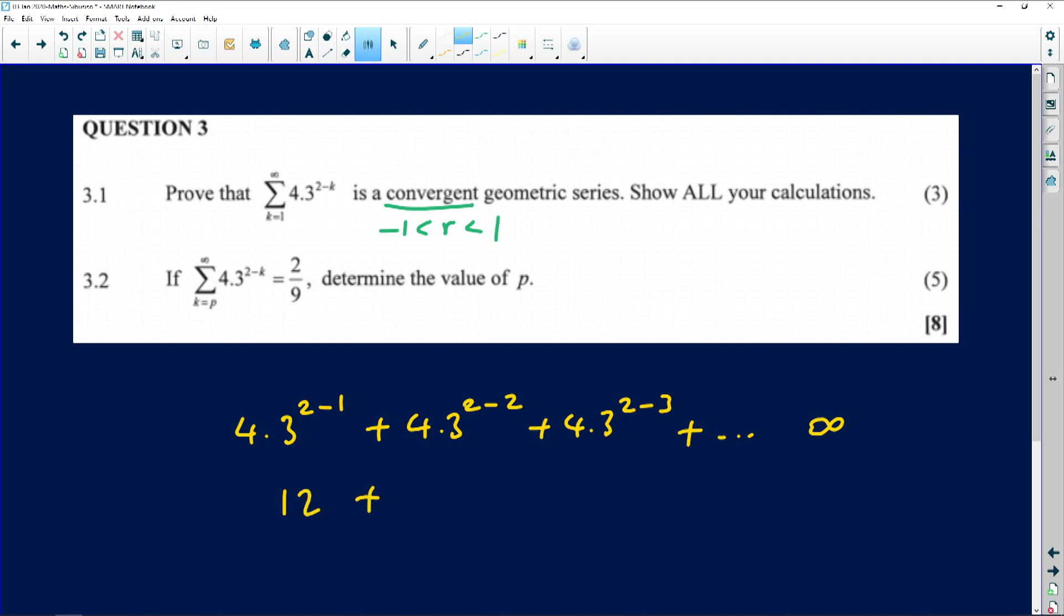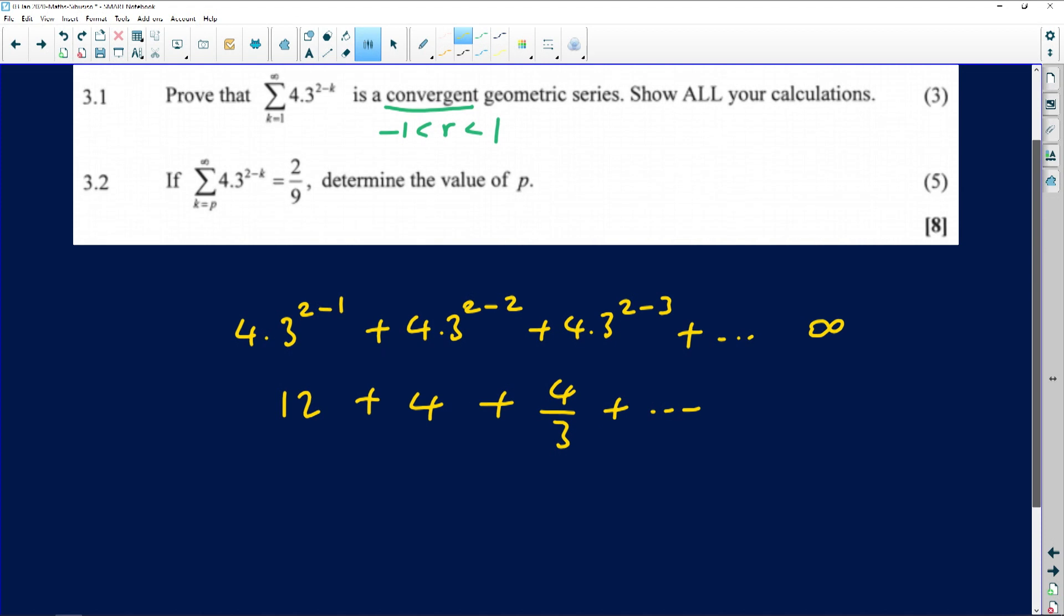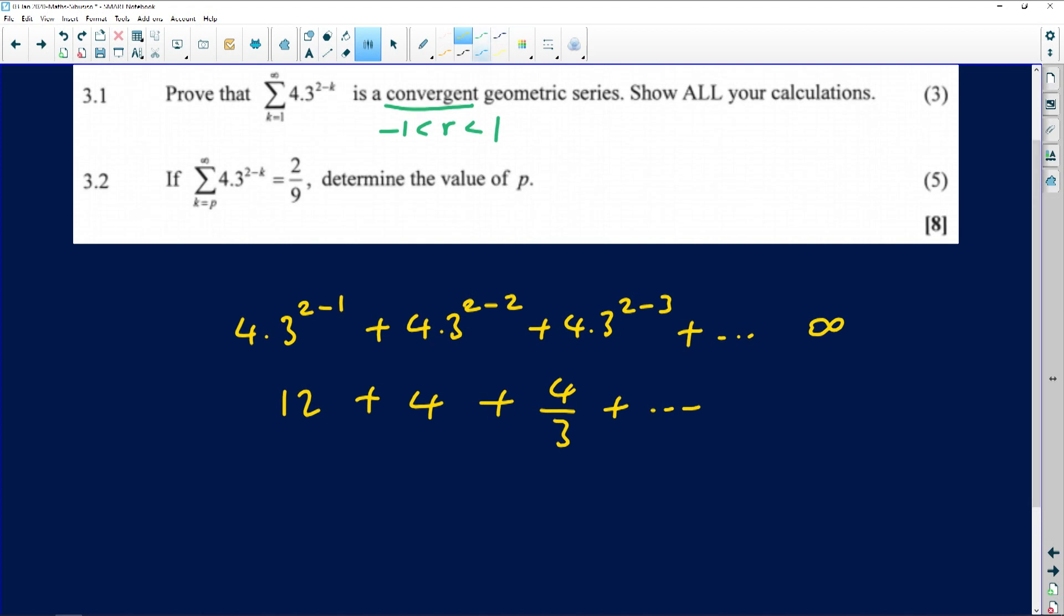The second term is going to be 2 minus 2, which is 0. So we can end up with an answer of 4, and then the third one is going to be just 4 divided by 3, and this goes on and on. Right, so we just want to find a common ratio. The examiners, by saying show all your workings, they want to see the expansion, and then they want to see you working out your r value, which is t2 divided by t1, which is 4 over 12, which comes out as just 1 over 3.